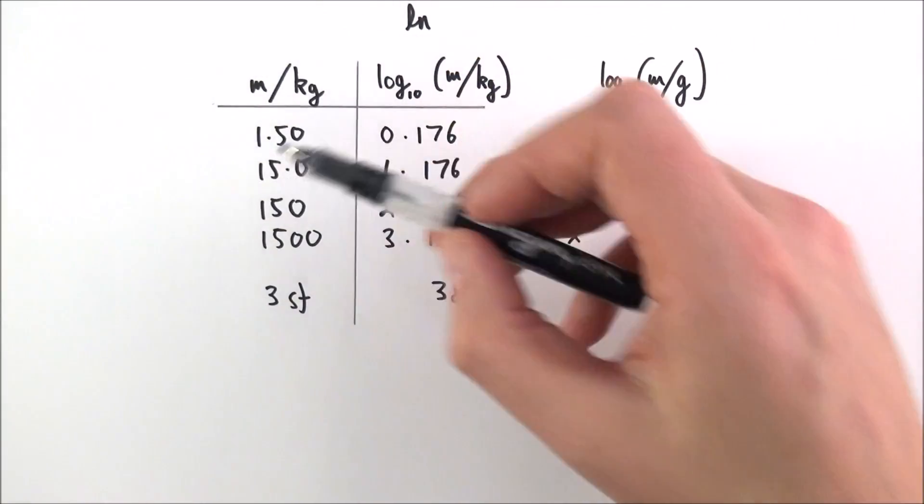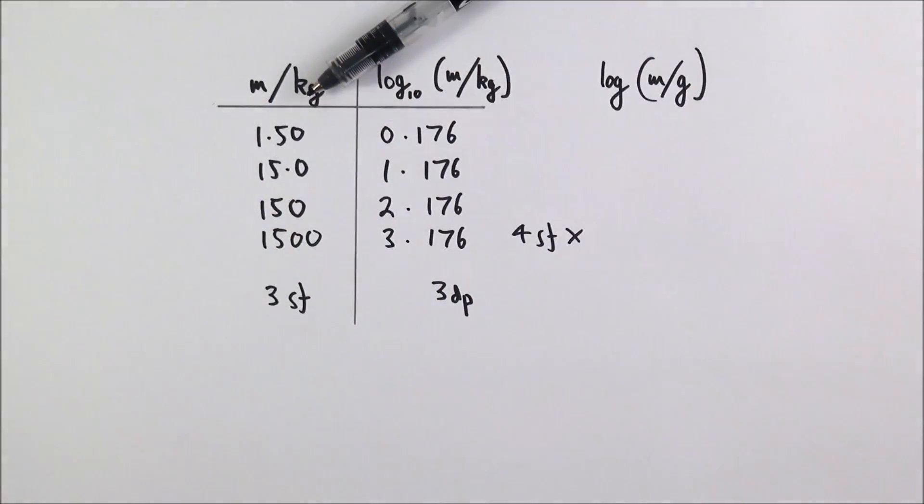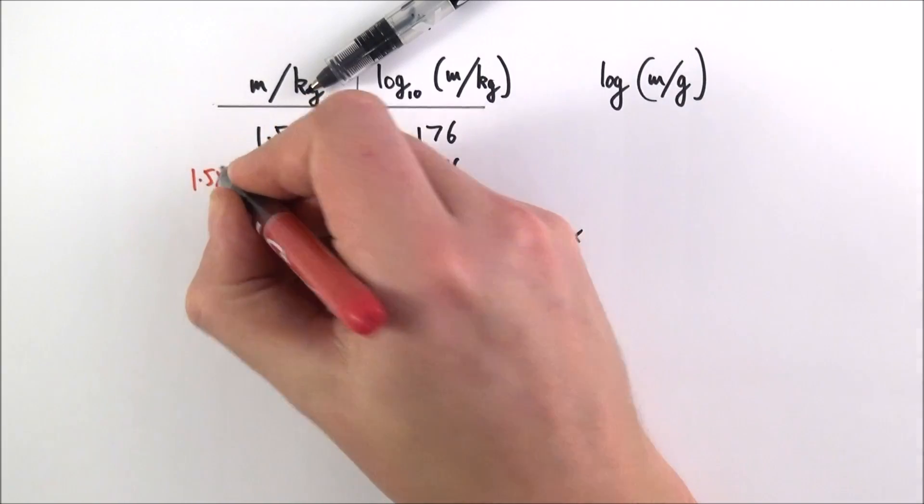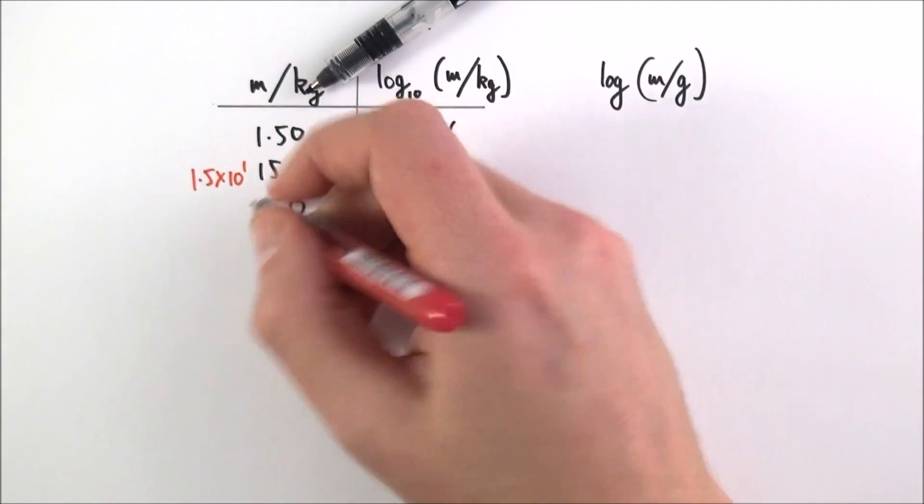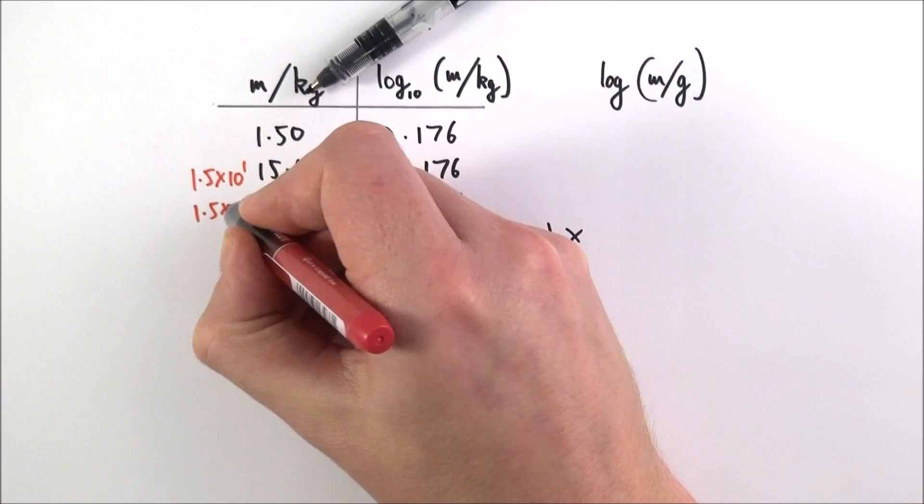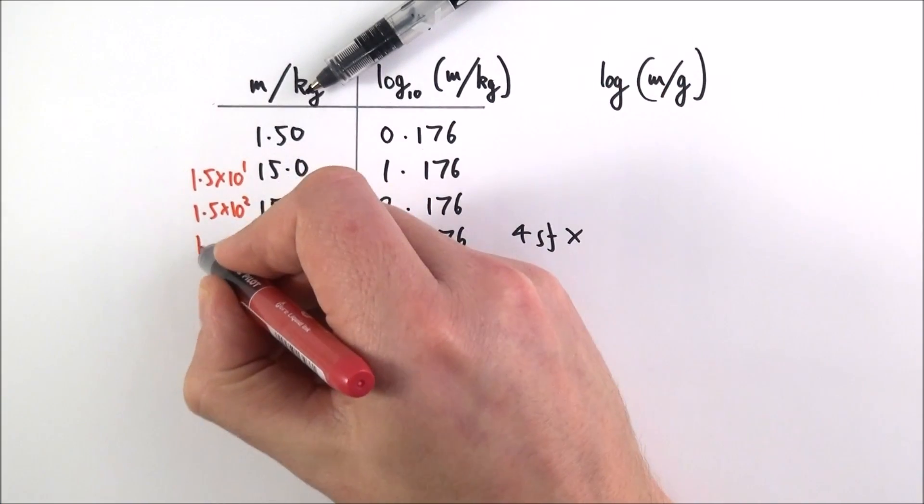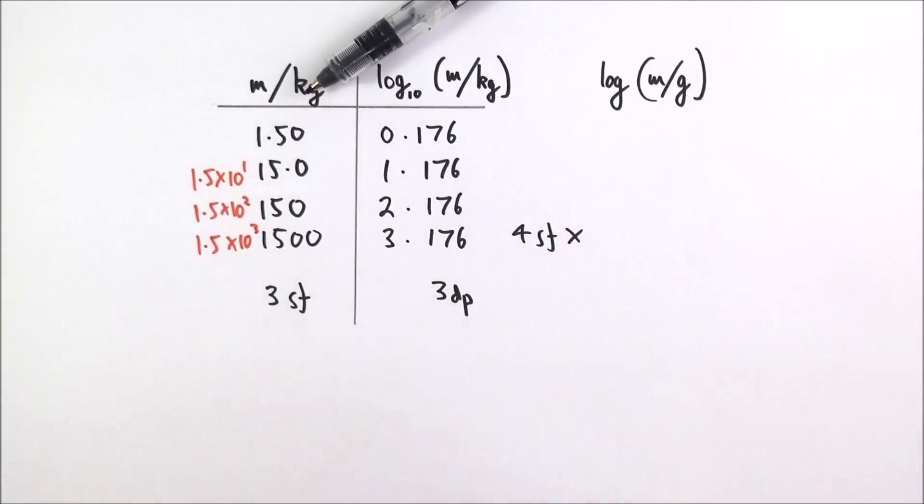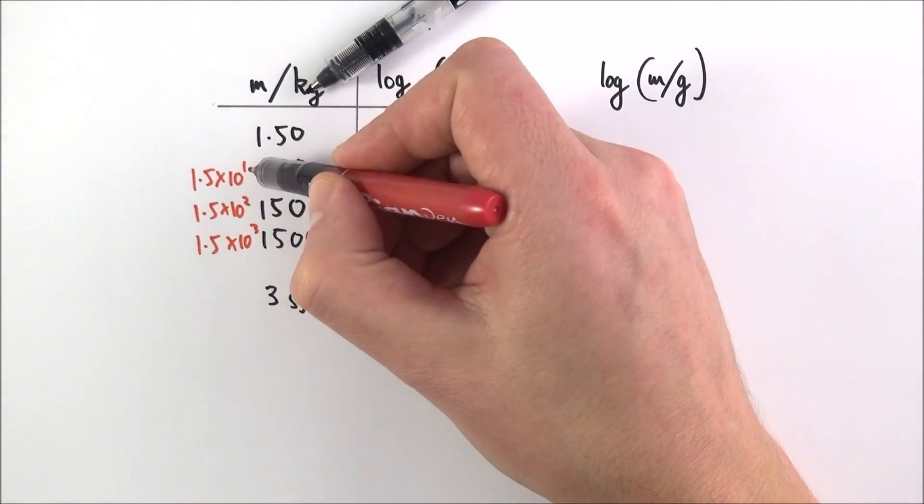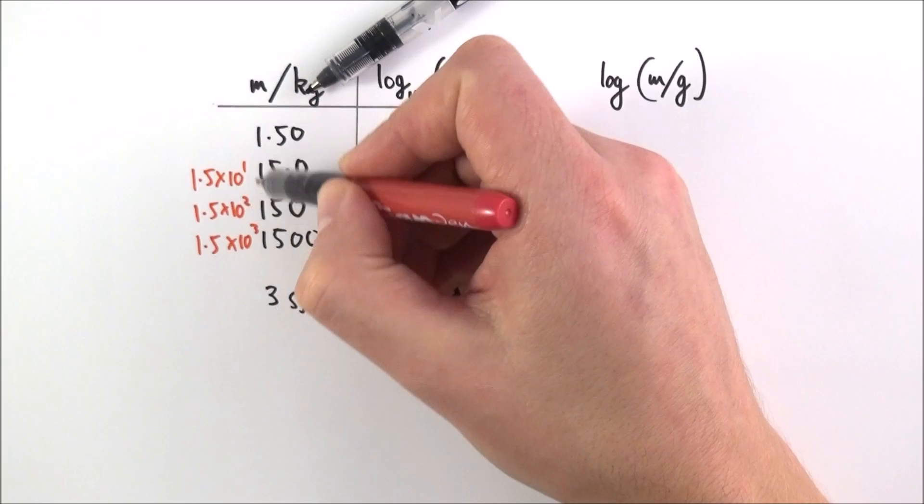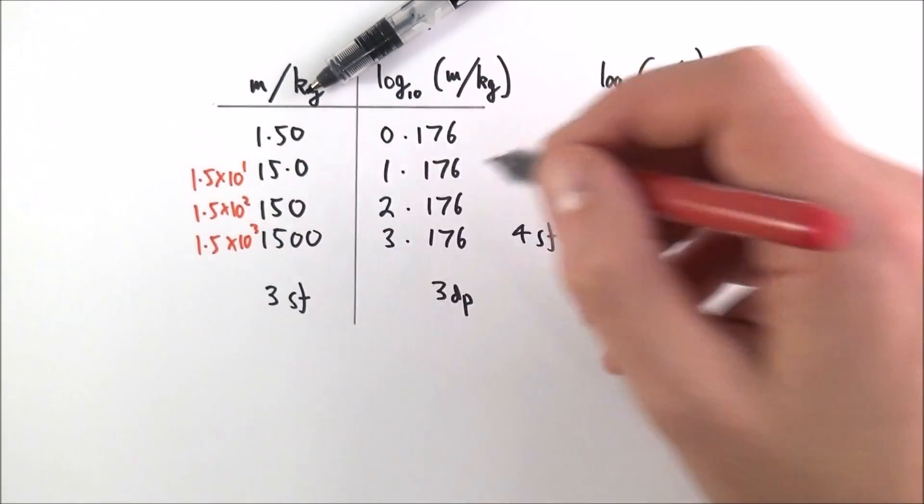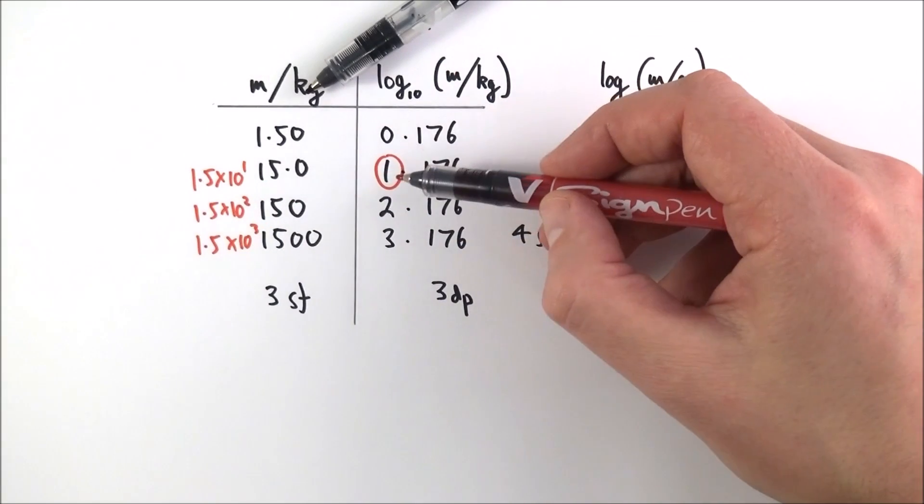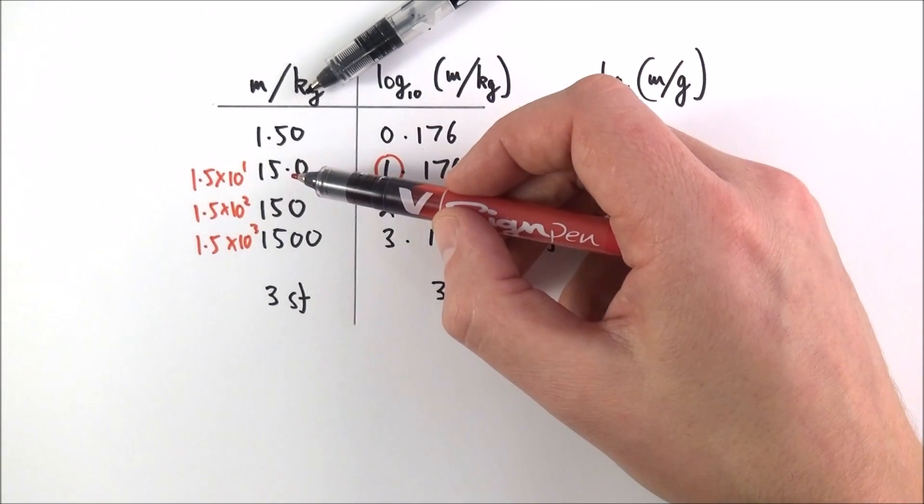Let's think about how you might write this in standard form. 15.0 equals 1.5 times 10 to the 1, this value is 1.5 times 10 to the 2, and this is 1.5 times 10 to the 3. The point is that this number—1, 2, or 3—tells us about the size of this number. This number here tells us how big the true value is.